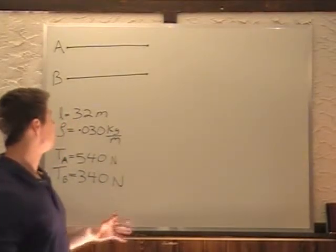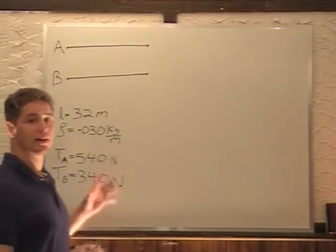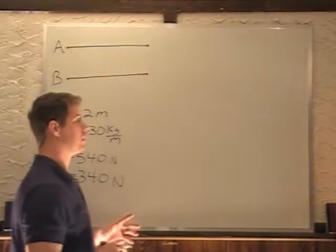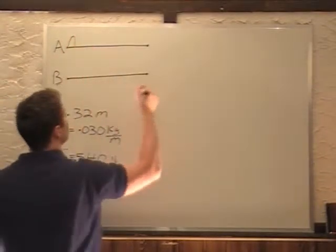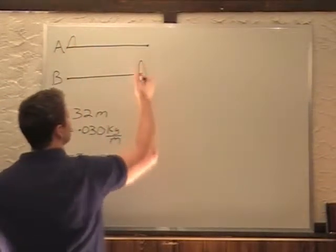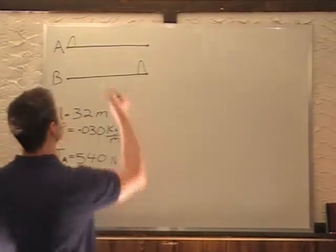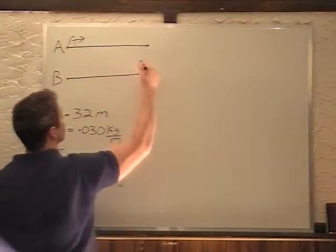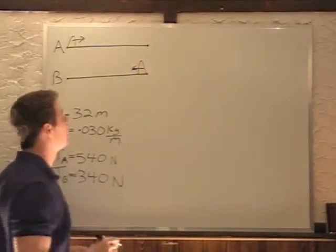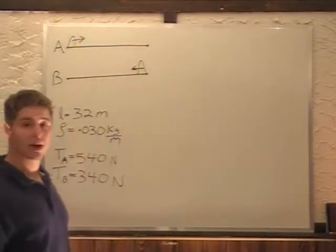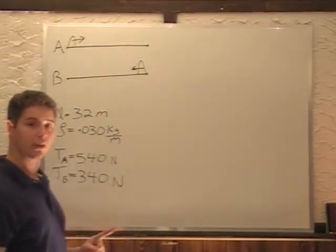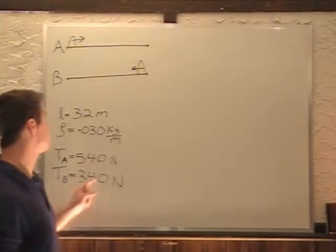We're told that we generate a pulse at one end of each of them. So we generate a pulse at one end of A and a pulse at one end of B at the same time. Now they travel towards each other. At some point they're going to cross each other, not in the middle because they're not traveling the same speed. They're traveling different velocities because they have different tensions in each wire.